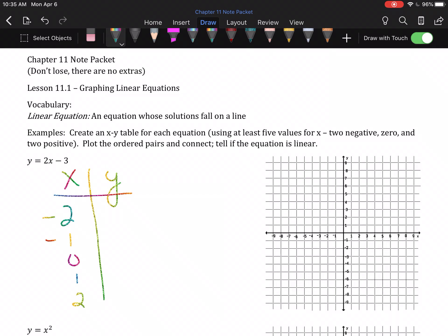So, 2 times negative 2 is negative 4, minus 3 is negative 7. 2 times negative 1 is negative 2, minus 3 is negative 5. 2 times 0 is 0, minus 3 is negative 3. 2 times 1 is 2, minus 3 is negative 1. And 2 times 2 is 4, minus 3 is 1.